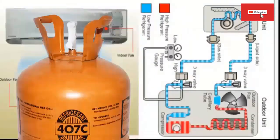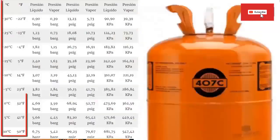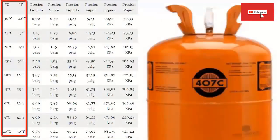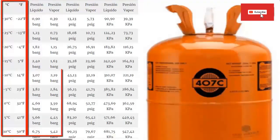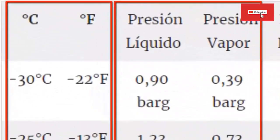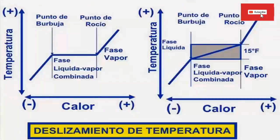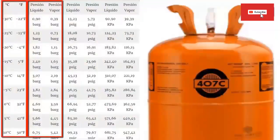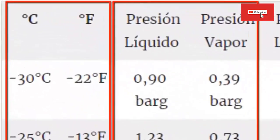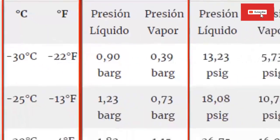Now we focus on the gauge pressures of R-407C in an air conditioner. In the table, the first column shows the saturation temperature, followed by the bubble or liquid pressure, and then the vapor or dew pressure. There are two types of pressures because R-407C has glide, meaning the temperature of its transformation from liquid to vapor — or vapor to liquid — does not remain constant. In an azeotropic mixture, the change of state of the most volatile compounds occurs first, causing the temperature to increase throughout the phase change until evaporation occurs entirely.